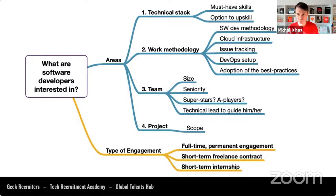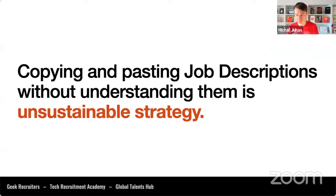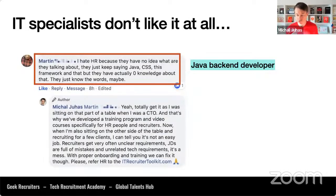They want to know about the team size, seniority of team members, whether there are any A-players or superstars, whether there is a technical lead to guide and mentor, and the length and scope of the project. These are the pieces of the puzzle usually missing from a typical job description. Our role in recruitment is to go from job description to job promotion — copying and pasting job descriptions without understanding who the hiring manager is looking for is not a sustainable strategy.